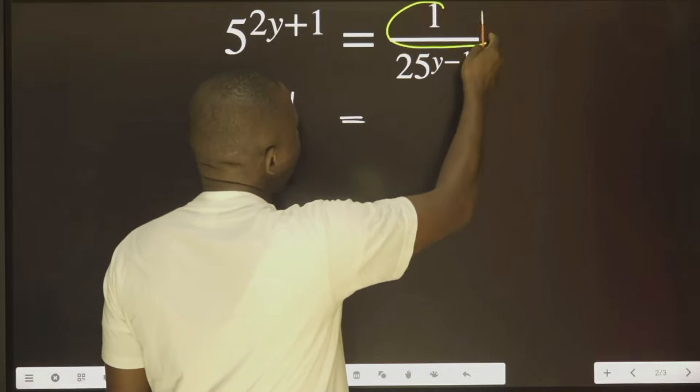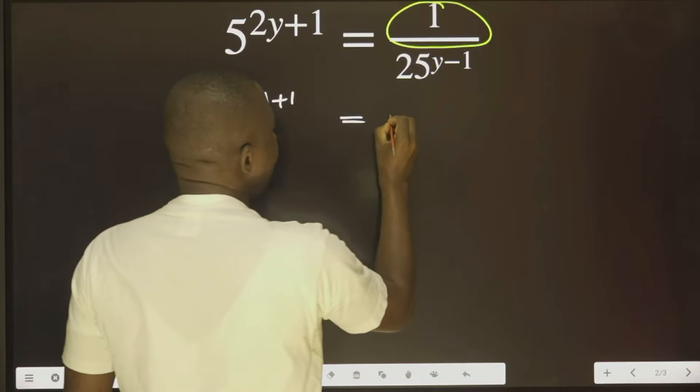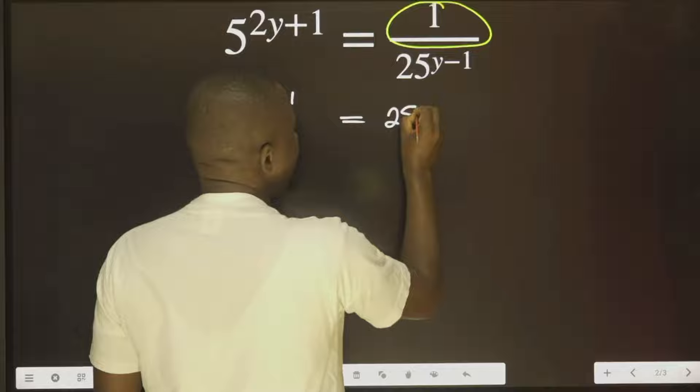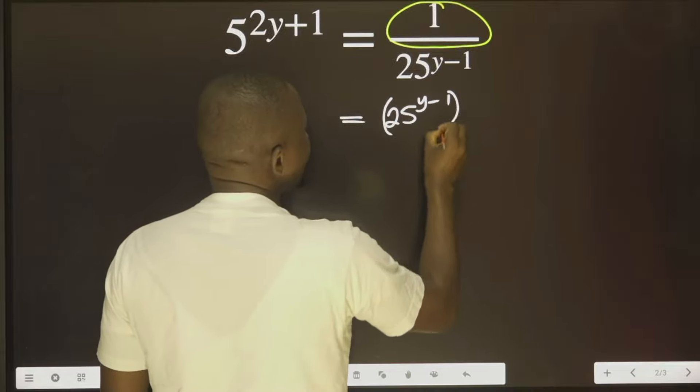I can move this now and put it as raised to power minus 1. That means I'm going to write this 25y minus 1 raised to power minus 1.